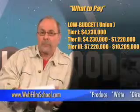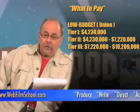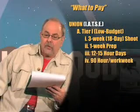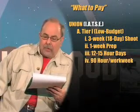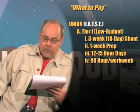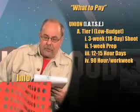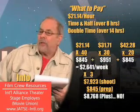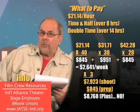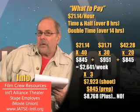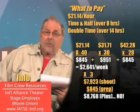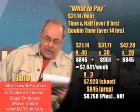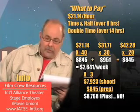What to pay a script supervisor? If you go union and you're low budget, you're probably tier one — anything under $4,230,000. What that means is, if it's IATSE union, you'll pay $21.14 an hour, but that's for approximately 40 hours. You're going to be working probably an 80, 90, or 120-hour week. With overtime, that's going to cost approximately $8,768 over a three-week shoot for your script supervisor.